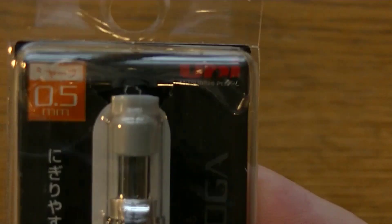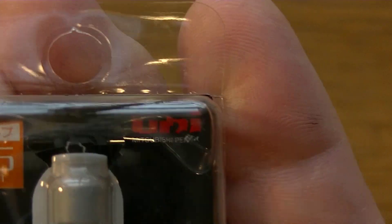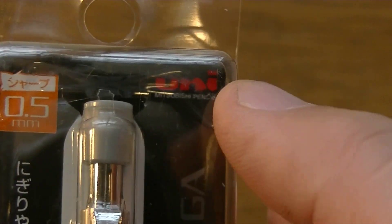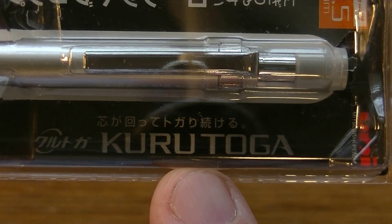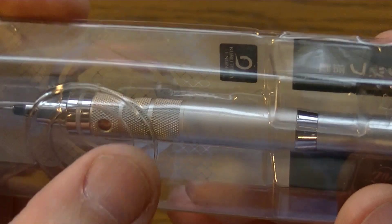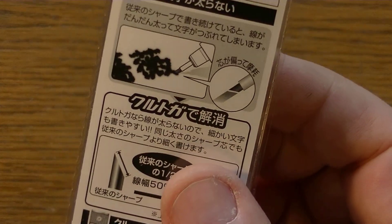This one is called the Uni. You can see right in there it says Uni. Kuru Toga. It is a roulette mechanical pencil.